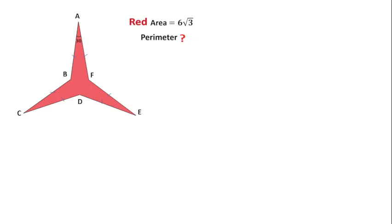Welcome to Definite Mind. This is the American Mathematics Competition AMC 2021 question. In this question, it is given that the red area of this star polygon is 6√3 square units, this angle is 30 degrees, all the sides of this star polygon are equal, and we have to find the perimeter for this figure. I will give you the best solution in this video.